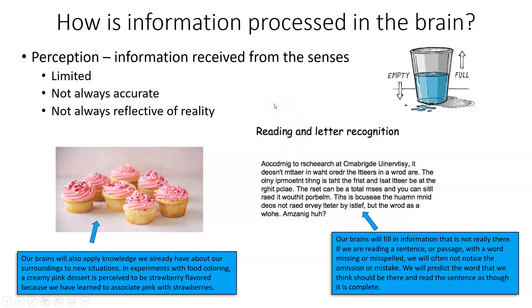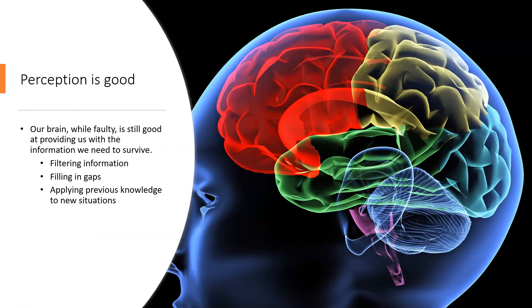So perception is good. It can lead you to incorrect assumptions. However, for the most part, perception is good and so our brain, while faulty, is still good at providing us with the information we need to survive. It may not be good at making you perceive a particular cupcake flavor, but it is good at actually ensuring your survival. And so your brain does filter out information that it feels isn't necessary to survival. It fills in the gaps for missing bits of information that it feels are good for survival. And it also applies previous knowledge to new situations that it feels will increase your chances of surviving those new situations as they come.